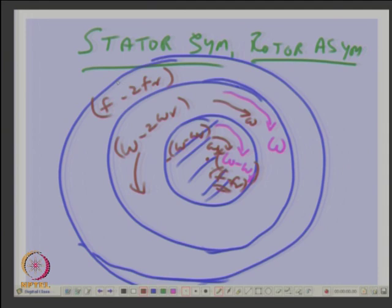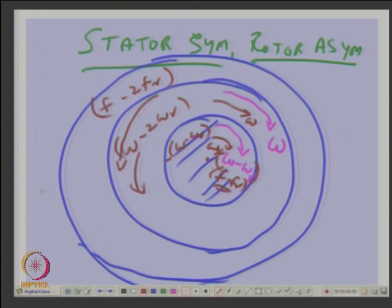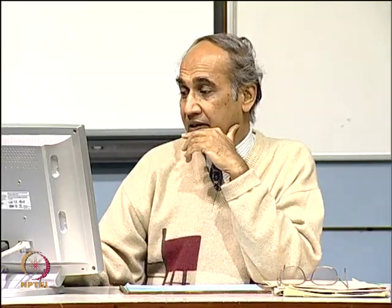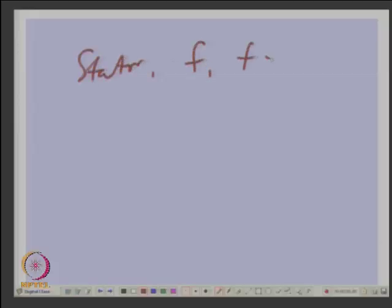The stator will now see another additional field rotating in the opposite direction at omega minus 2f_r, giving rise to f minus 2f_r backward. This field will induce balanced currents in the stator because stator is balanced, and that means it will give rise to another field in the stator which is in synchronism with the inducing field. But it will not create any more negative field because stator is symmetrical — it will only give rise to one field. So in this model, stator will have frequencies f and f minus 2f_r, and rotor will have frequency f minus f_r.